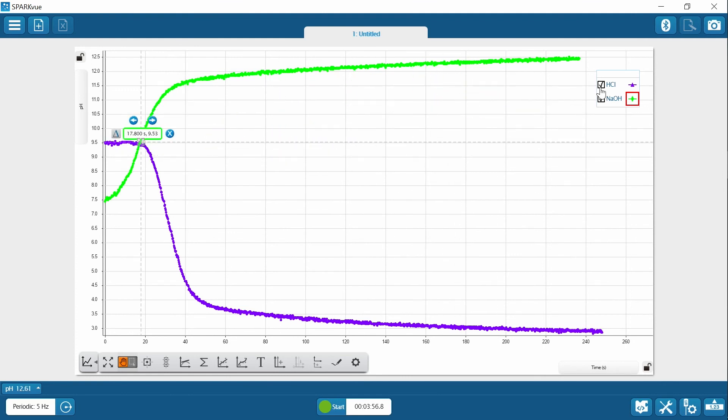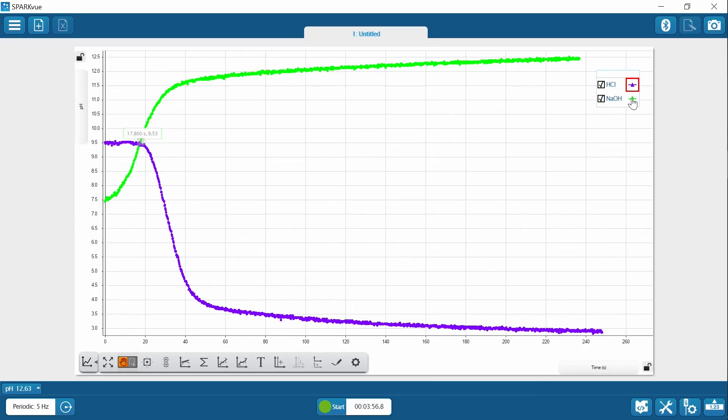Notice how both runs are checked in the legend. I can hide or make a run visible by checking the box. If I want to get coordinates for the HCL run, I need to make sure the red box in the legend is on that run. When you use any of the Spark View tools, make sure the red box is on the run you are interested in.